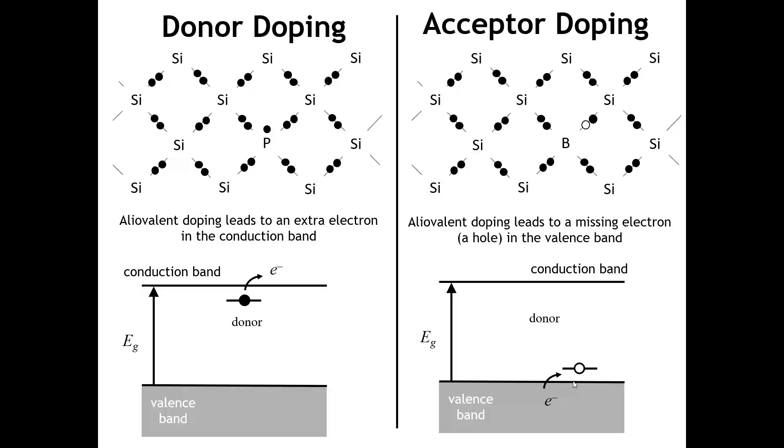Now the hole, of course, being a missing electron, has a positive charge. So when we apply an electric field, the holes are going to move toward the negative end of the potential, the electrons toward the positive end. So it moves in the opposite direction of an electron charge carrier.